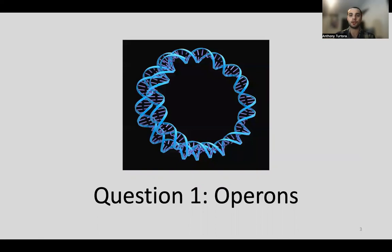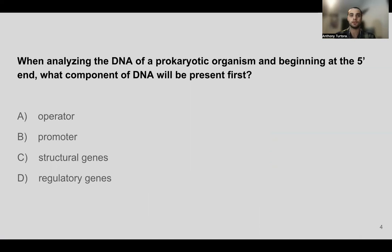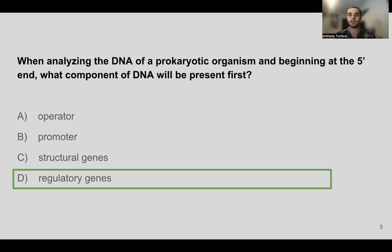The first question is about operons. Read it to yourself silently, get your answer, and then we will go over it. The question states: when analyzing the DNA of a prokaryotic organism and beginning at the five prime end, what component of DNA will be present first? The answer to this question is D. We will go over this as well as some other things in the following slides.